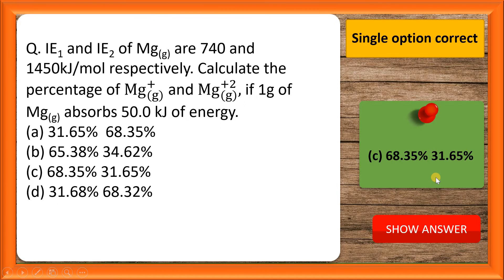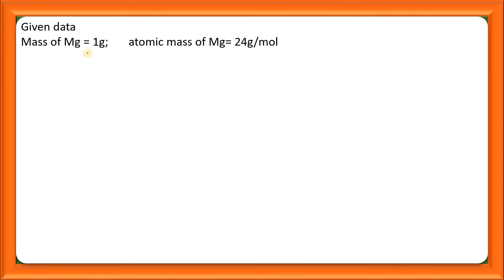Let us see the detailed solution for this question. First we will discuss given data. We are given 1 gram of magnesium, atomic mass of magnesium is 24 grams per mole, so number of moles of magnesium is mass of magnesium, 1 gram, divided by atomic mass of magnesium, 24 grams per mole, so this comes out to be 0.0417 moles.